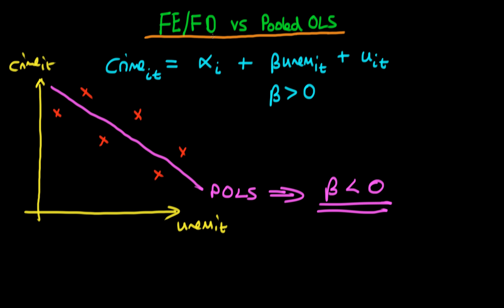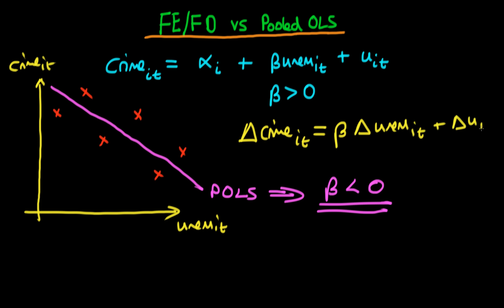If we look at what fixed effects and first differences do, both estimators treat observations from different cities as being different. In first differences, you regress the first difference of the crime rate in city i at time period t on the first difference of the unemployment rate in city i at time period t, plus the first difference of the error u_it. Notice that we have removed the unobserved heterogeneity term alpha_i.